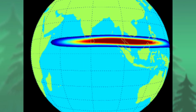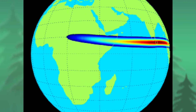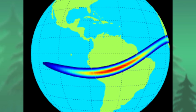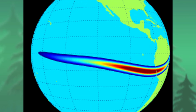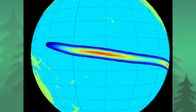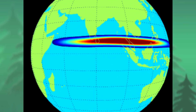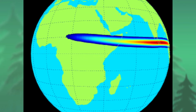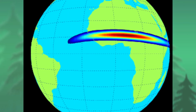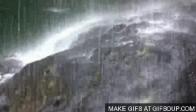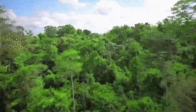The equatorial region is between 10 degrees north and 10 degrees south latitudes. The climate of this region is hot and wet. The temperature difference between day and night and between summer and winter is also very low. Its average annual temperature is 27 degrees Celsius.